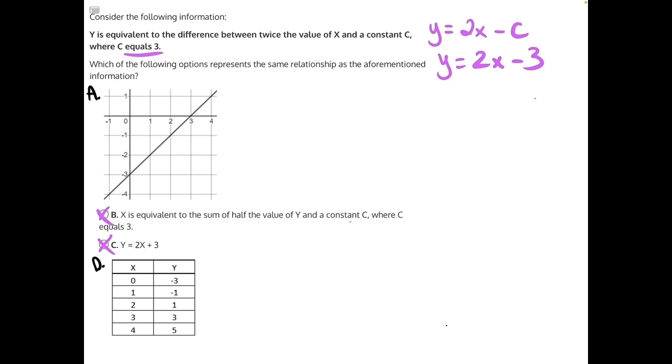For answer choice a, our y-intercept is correct at negative 3. However, let's check our x-intercept. This is the point 3 comma 0, so we can plug in those two points and see if it's correct. y is equal to 0, 2x is equal to 3 minus 3. 2 times 3 will give us 6 minus 3. And 6 minus 3 is equal to 3, which is not equal to 0, making a incorrect.